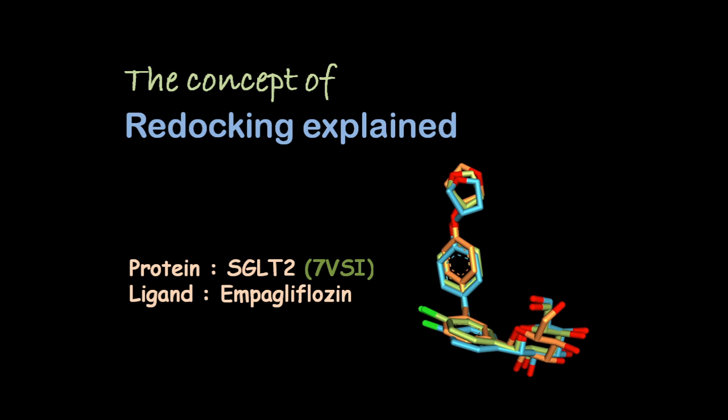Step by step, in this video I am going to explain everything about re-docking. For explaining, I am going to use a protein SGLT2, that means sodium glucose co-transporter 2, which is present in our kidney and involved in transport of sodium and glucose molecules. The PDB ID of this protein is 7VSI, and this structure has been determined using cryo-electron microscopy. Associated with this protein is its natural ligand, empagliflozin, which is an inhibitor of SGLT2.